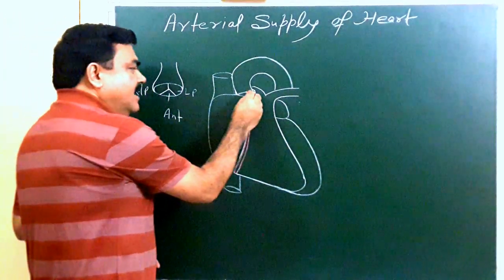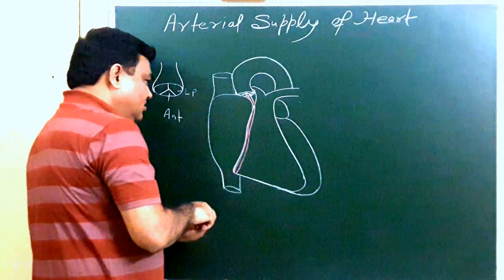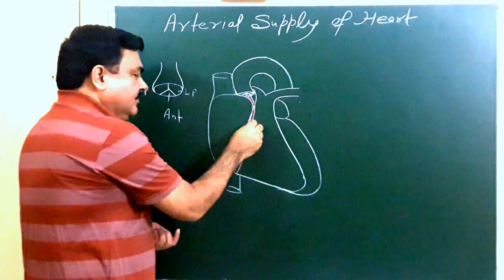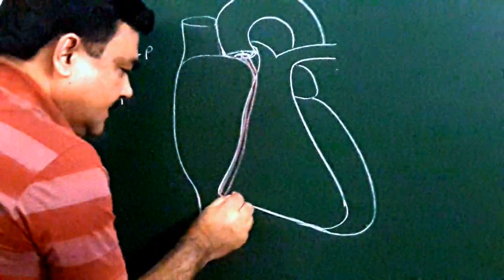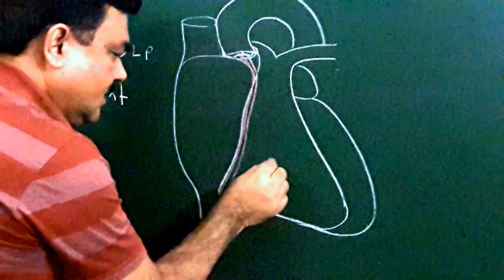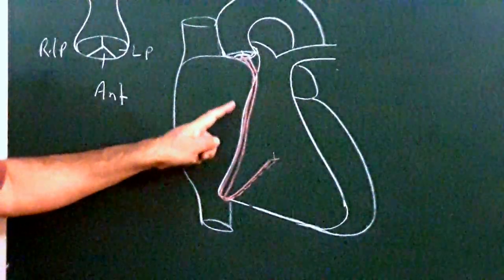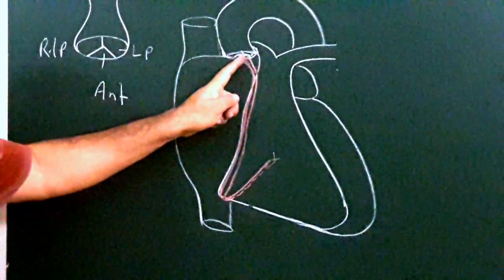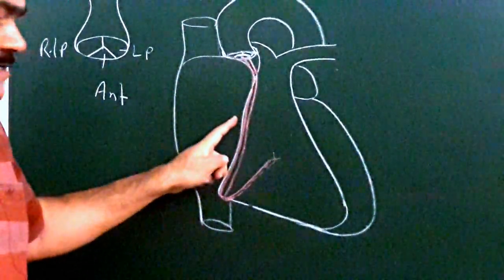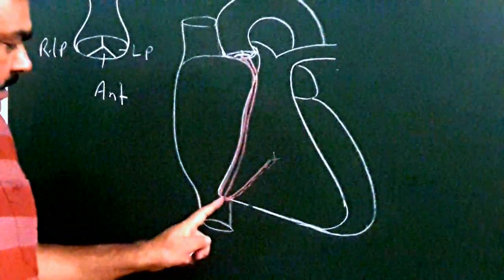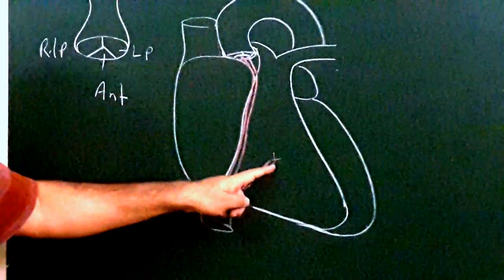After arising from the anterior aortic sinus, the right coronary artery passes through the right atrioventricular groove. At the level of the inferior border, this artery turns onto the diaphragmatic surface of the heart. So the right coronary artery arises from the anterior aortic sinus, passes between the right auricle and pulmonary trunk, then passes into the right atrioventricular groove, reaches the inferior border, and turns onto the diaphragmatic surface.